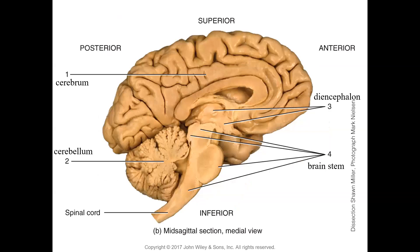This is a cadaver dissection of a brain showing a mid-sagittal section. Here you can see the spinal cord, the medulla oblongata, the pons, the midbrain, and the diencephalon. The cerebellum is at the back, and the cerebrum is on top.